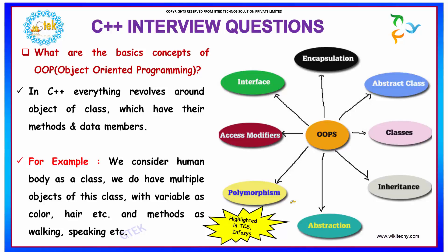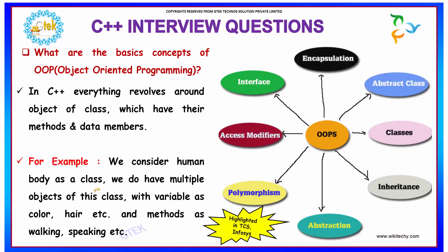What are the basic concepts of OOPS or Object Oriented Programming? In C++, everything revolves around the object of the class, which have their methods and data members, so each object will have their own copy of methods and data members. Suppose if we consider a human body as a class, then we have multiple objects for this class with variables like color, hair, etc., and the methods are functions like walking, speaking, and etc.